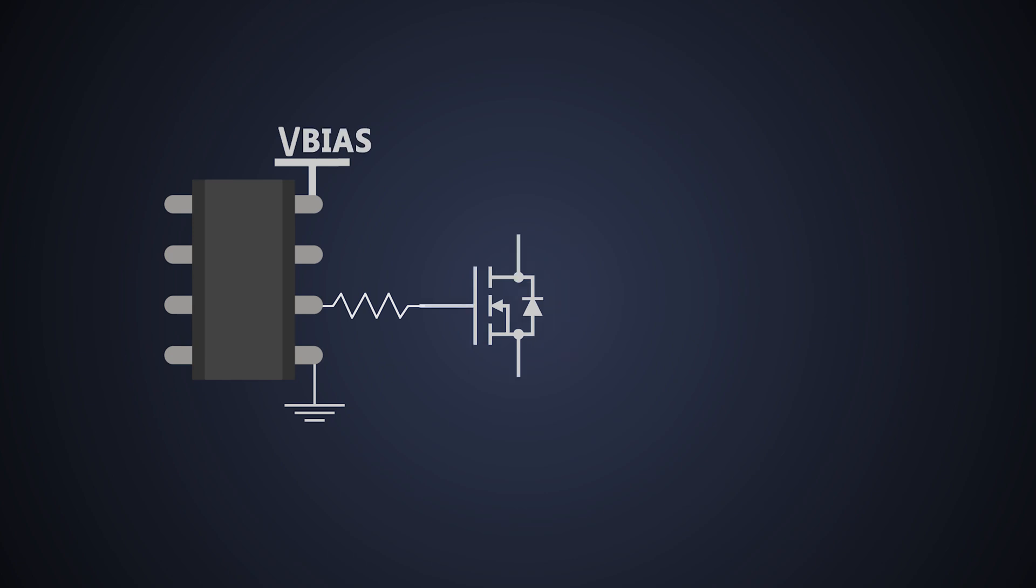When we use a MOSFET in fast switching application, we use PWM controllers specific to an application to reduce the component count. Let's say we are using a PWM controller for boost DC to DC converter. Its output voltage is 0 to 5 volts.